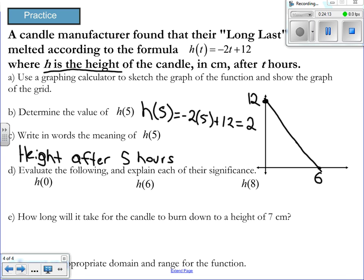H of 8, somebody figure out what that'll be. Negative 4. What's the significance of that? There's something significant about that number. Yeah. Because the candle can't burn negative. It doesn't exist. That's the significance of it. It's not possible.